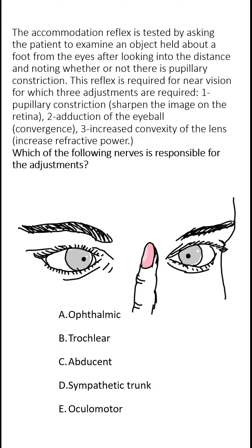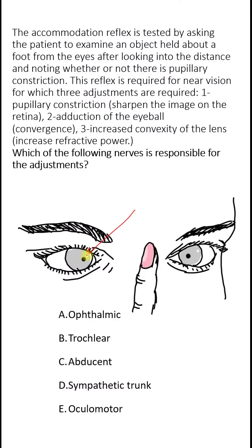This results in three adjustments for viewing a close object. First is pupillary constriction, which sharpens the image on the retina. Then there is adduction of the eyeballs, which is called convergence. Finally, there is increased convexity of the lens — which cannot actually be detected externally, but does take place.